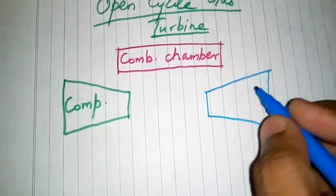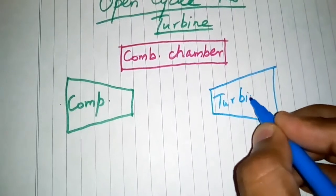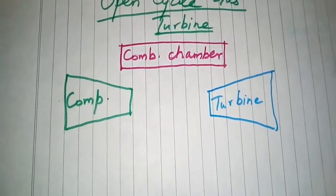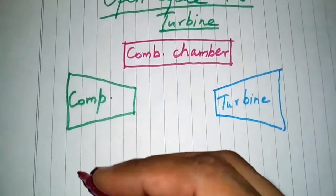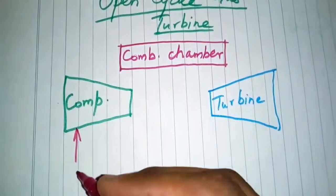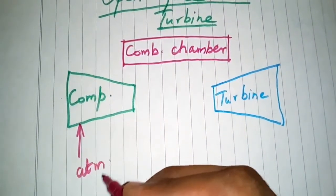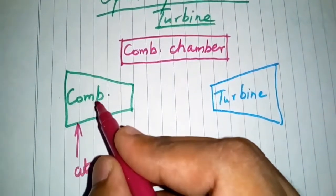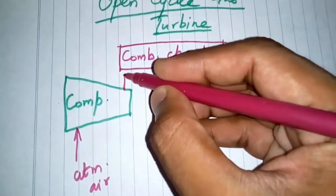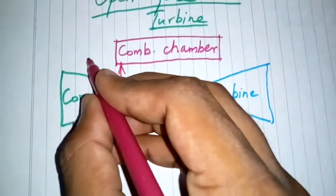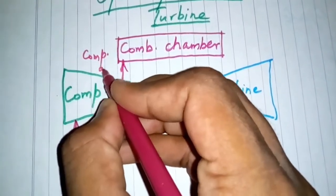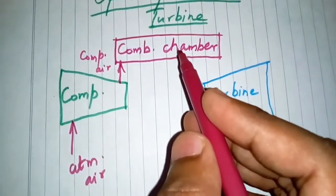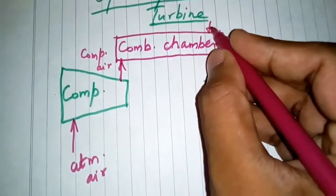The atmospheric air is compressed in the compressor. The compressed air is then supplied to the combustion chamber.